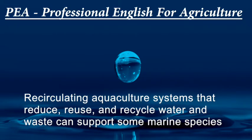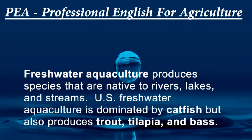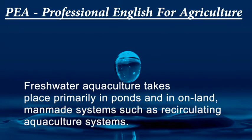Recirculating aquaculture systems that reduce, reuse, and recycle water and waste can support some marine species. Freshwater aquaculture produces species that are native to rivers, lakes, and streams. U.S. freshwater aquaculture is dominated by catfish, but also produces trout, tilapia, and bass. Freshwater aquaculture takes place primarily in ponds and in on-land man-made systems such as recirculating aquaculture systems.